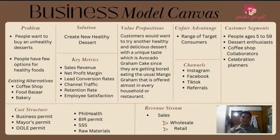For our cost structure, we listed the required permits to open a business and for it to function legally. We also added raw materials because this is where the majority of our expenses come from.